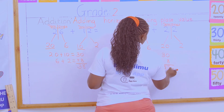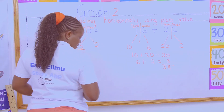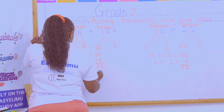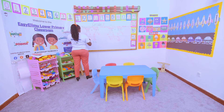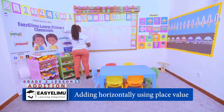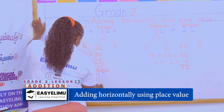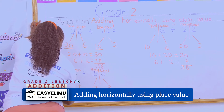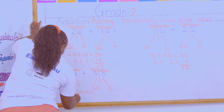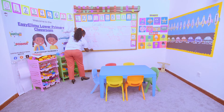Let's do another example: 14 plus 53. Rule number one — show the ones and the tens. One ten and four ones; five tens equal 50 and three ones equal 3. So 10 plus 50 equals 60, and 4 plus 3 equals 7.